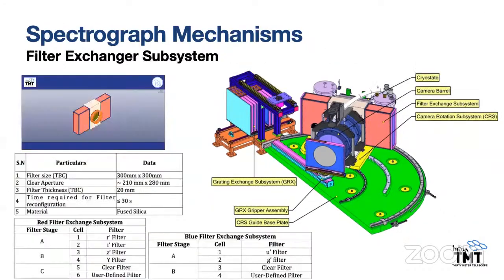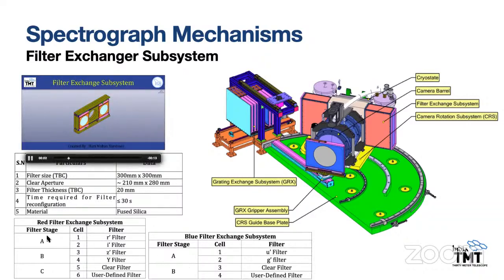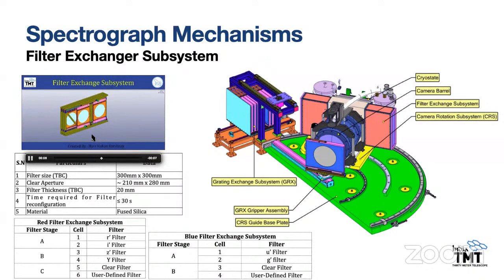The filter exchanger uses broadband filters at the camera focus. There are two sets of filters in the blue channel and three to four sets in the red channel. Both systems will be identical except for an additional cell in the red channel.